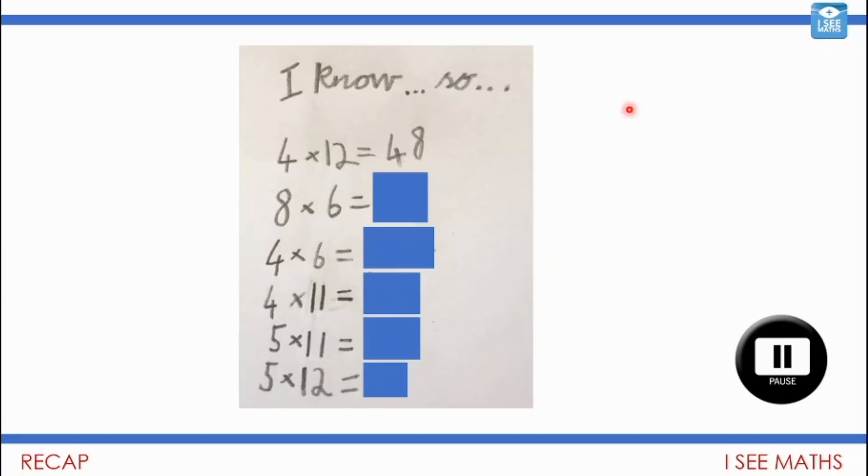So look what's the same, what's different. You might even be able to work out the answer and see how they're connected. Okay, well let's have a look. Well, 4 twelves are 48, and then we had a look at this doubling and halving strategy. Double the 4, it's 8, and halve the 12, it's 6. So actually 8 sixes will be 48 as well.